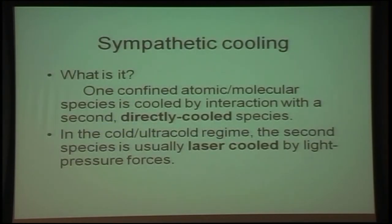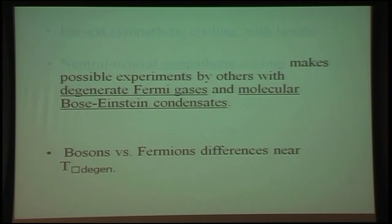Sympathetic cooling I would define as one confined atomic or molecular species cooled by interaction with a second directly cooled species. The second species is normally laser cooled by light pressure forces. David Wineland and others have exploited ion-ion sympathetic cooling where you laser cool one species and then co-trap in an ion trap a second species which collides by Coulomb interactions. Neutral-neutral sympathetic cooling is very important in studying degenerate Fermi gases and Bose-Einstein condensates.